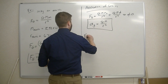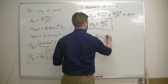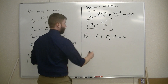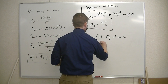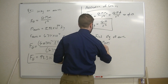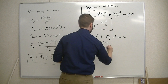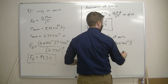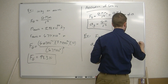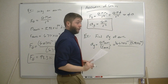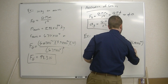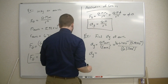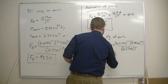To find the acceleration of gravity of the Earth: the acceleration of gravity equals big G times the mass of the Earth divided by the radius of the Earth squared. That would be 6.67 times 10 to the minus 11, multiplied by 5.98 times 10 to the 24th, divided by 6.37 times 10 to the 6th, the quantity squared. And I get that the acceleration of gravity on the Earth is 9.8 meters per second squared.